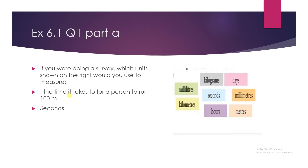After understanding the concepts of primary and secondary data and taking some examples, we will move towards exercise 6.1, question 1 part A. This is a simple question — you just have to identify the units. The question is: if you were doing a survey, which units would you use to measure the time it takes for a person to run 100 meters? Since 100 meters equals 0.1 kilometers, this will be measured in seconds.